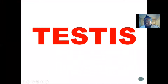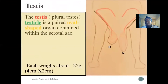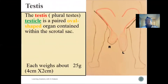Let's look at the testes and go through this lecture to see the morphology of the testes. The testis, also referred to as the testicle, is an oval-shaped organ that is located inside the scrotum.